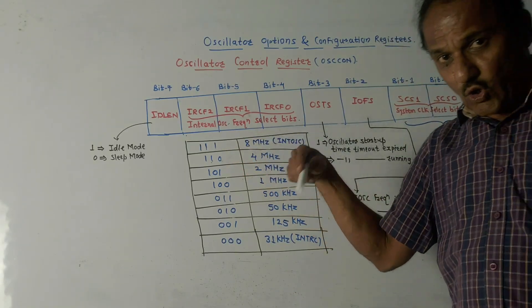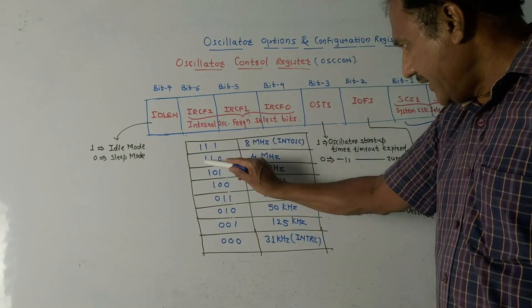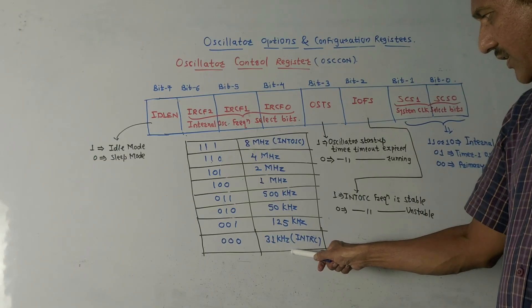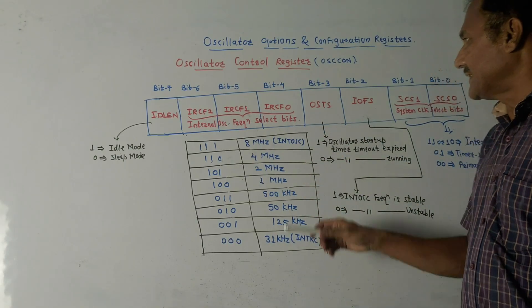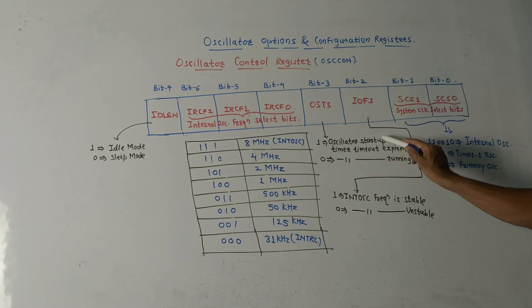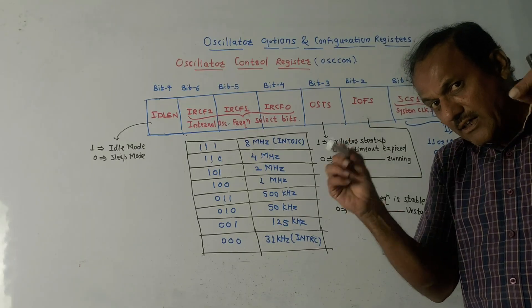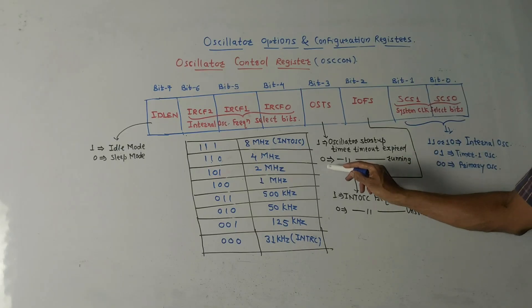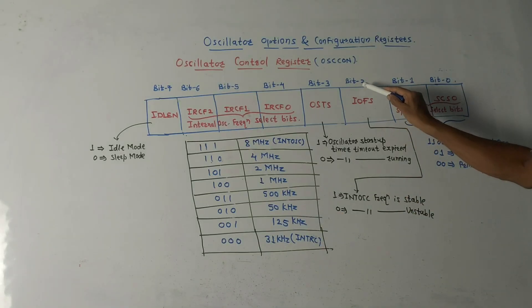If the combination is 1-1-1, the clock frequency will be 8 MHz, generated directly from the internal clock source. Next, 1-1-0 gives 4 MHz, and so on. Lastly, 0-0-0 gives a clock frequency of 31 kHz using the internal RC circuit (INTRC mode). Bit number 3 is the OSTS bit — if this bit is 1, it indicates that the oscillator startup timer timeout has expired. If it is 0, it indicates that the oscillator startup timer is in running condition.